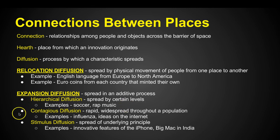The next is contagious diffusion — rapid, widespread throughout an entire population. Contagious diffusion takes on everybody because it doesn't care what your hierarchy is — whether you're a king or a poor farm worker. If you get the flu, it doesn't matter what your hierarchy is; everybody can get it. Flu is an example of contagious diffusion. Another example is ideas on the internet — whoever has the internet has access to it, it spreads rapidly, and everybody can see it.